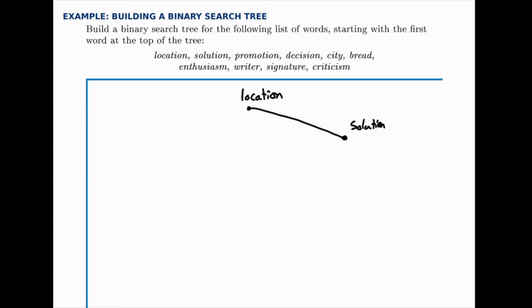'Promotion' — we start at the top of the tree again with 'location.' We move to the right because it comes after that. When we hit 'solution,' 'promotion' comes before that alphabetically, so we'll turn to the left, which means we'll put the word 'promotion' over here.